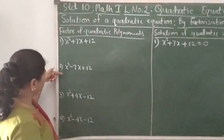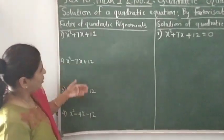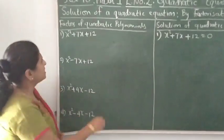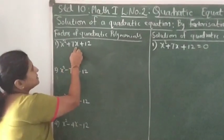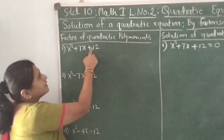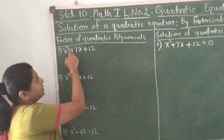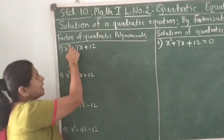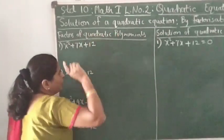I have selected four equations with all the varieties. The first polynomial is x² + 7x + 12. This is a trinomial in one variable x. The highest power is 2, so it is a quadratic polynomial.